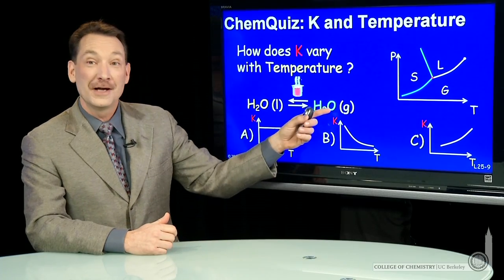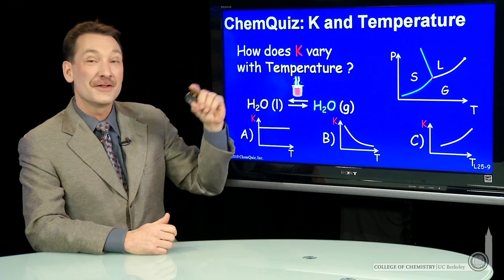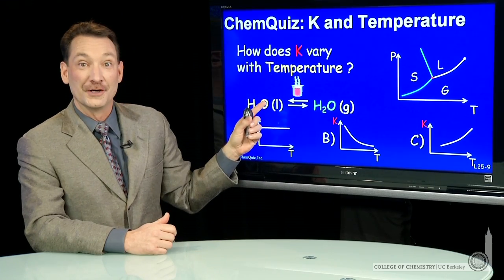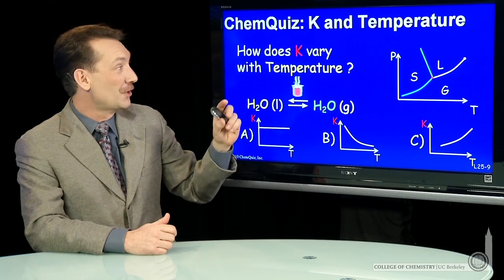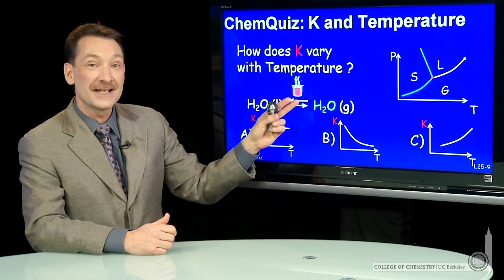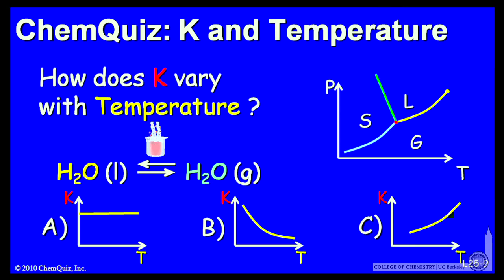Let's look at the water gas, water liquid system and talk about the equilibrium constant for this equilibrium as a function of temperature. So how does K vary with temperature for water gas going to water liquid? Is it A, B, or C? Think about that for a minute and make a selection.